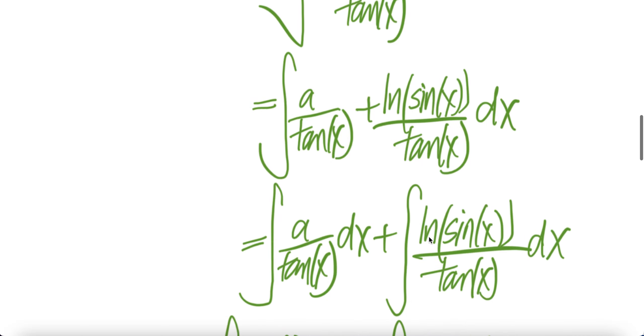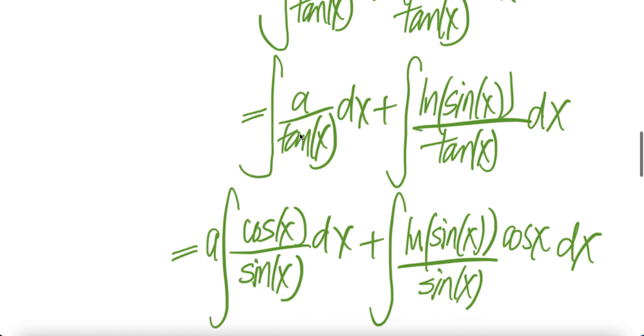And then integral sum of integrals, a constant out, write tangent as sine over cos, flip the cos out, you get cos x over sine x.